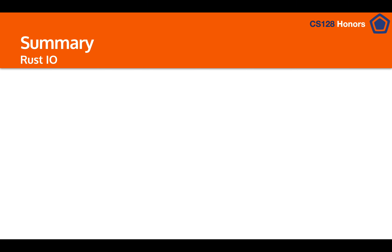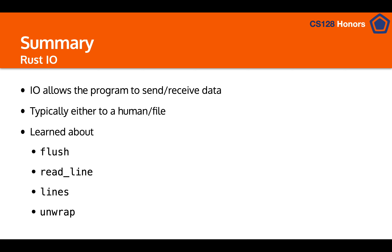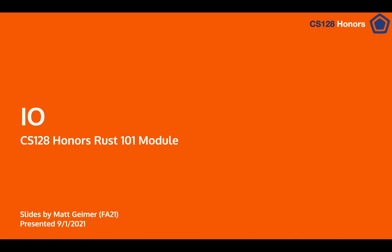In summary, we talked about Rust I/O — how it allows a program to send and receive data both from a human and from a file. We covered the flush command, `read_line()`, the `lines()` command, and how to `unwrap()` things. A key point of emphasis: `unwrap()` is not very safe and could crash your program, so we'll talk about better approaches in the near future. Hope you enjoyed this lesson — see you in the next one.